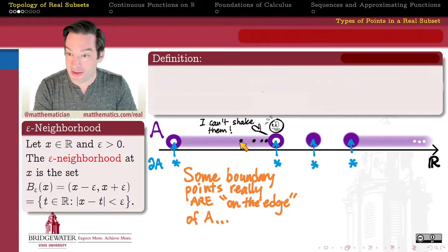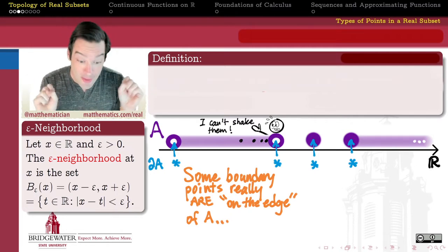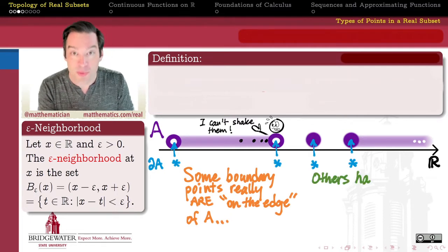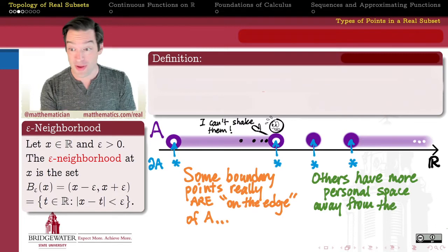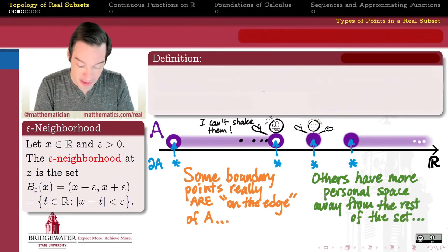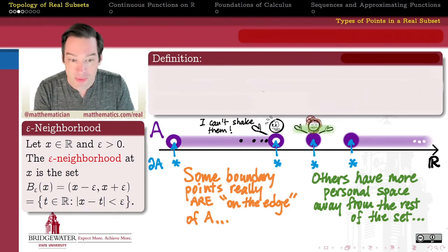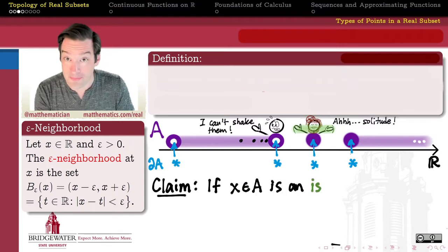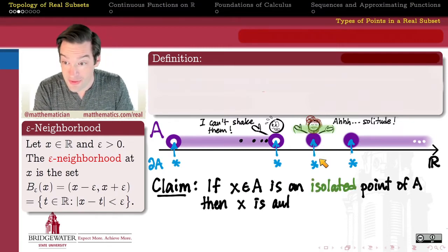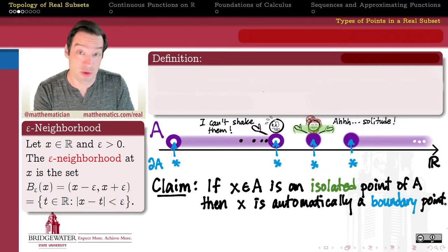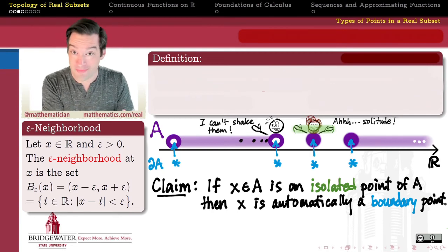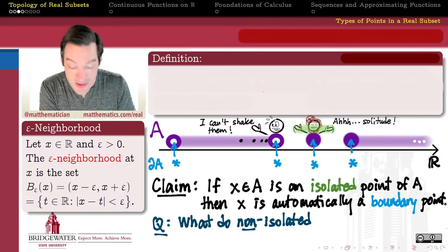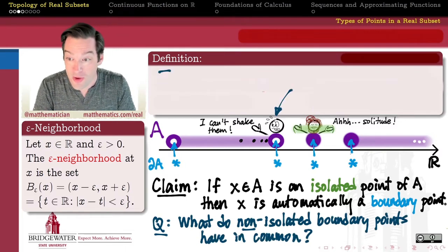Some boundary points really are on the edge of A. Some boundary points cannot distance themselves from the other elements of A in any meaningful way — no matter how short I reach out, I'm always going to be touching other points of A, clinging like facehuggers. Those points are different from boundary points that have more personal space, bounded away from the rest of A. These, as you'll remember, are the isolated points. We want to distinguish between these two qualitatively different kinds of boundary points. Isolated points automatically get to be boundary points, making them less interesting when it comes to figuring out what the boundary of a set is.